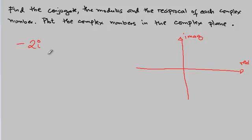In this case, this is equivalent to 0 minus 2i, meaning there's no real part. So negative 2i, 1, 2. This must be the point.